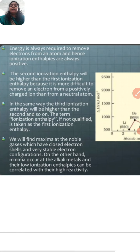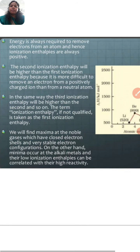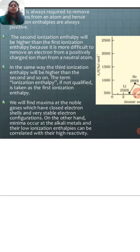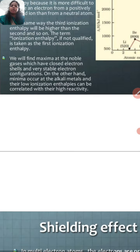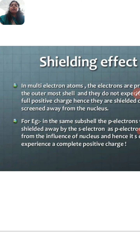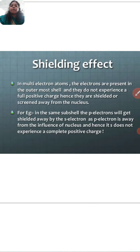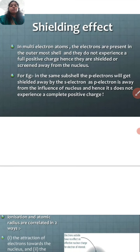To recap: energy is always required to remove an electron from an atom, so ionization enthalpy is always positive. The second ionization enthalpy will be higher than the first, and the third will be higher than the second. Now the next topic is the shielding effect.